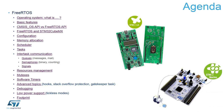Then we will go on to discuss the main components of FreeRTOS, starting from the scheduler, then switching to tasks. The next point will be a discussion about communication between tasks, covering queues, semaphores, and signals.